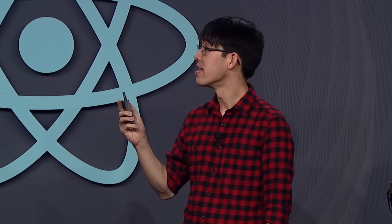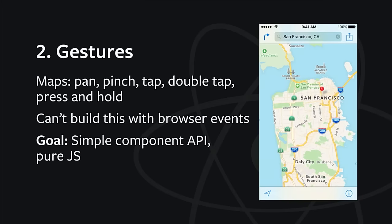We think a good gesture system for React is super important — one with a simple component API so it's easy to add gestures right into the tree of components, staying within the React model. We also want it written entirely in JavaScript, because on React Native we could interface with iOS and Android gesture systems, but then you'd need to worry about platform differences and it wouldn't work on mobile web. We'd rather implement it in pure JavaScript so you have the same gesture system across every platform, including the web, so web apps can also feel really good.